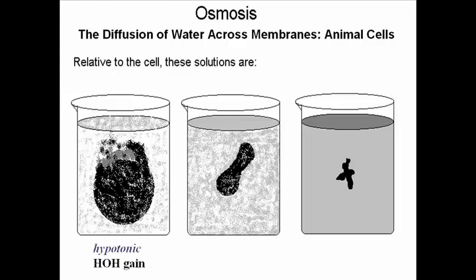The solution on the left is called hypotonic to the cell, which means it has fewer or less dissolved solutes. The result is, the water is going to move from the region where it's at high concentration, where there are fewer solutes, i.e. outside the cell, into the cell. It rushes into the cell which has a higher concentration of dissolved solutes or substances. The cell of course swells and bursts.